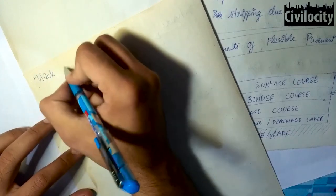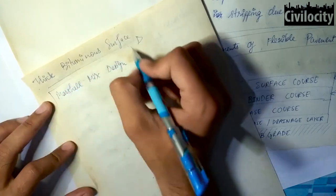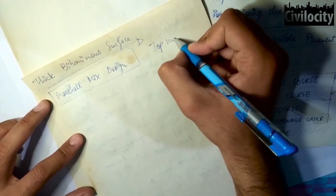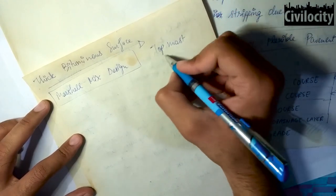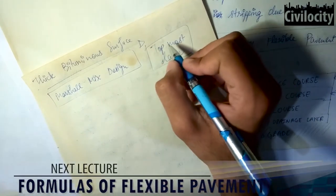Now let's talk about the topmost layer, that is the thick bituminous surface. So this layer is designed with the help of Marshall mix design and it is the topmost layer of our flexible pavement, and it bears all the stresses and firstly all the loads are taken up by this layer.